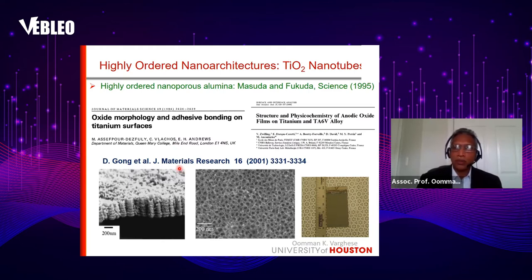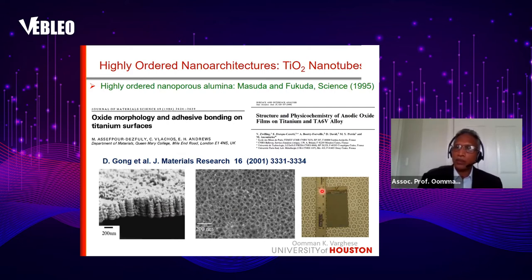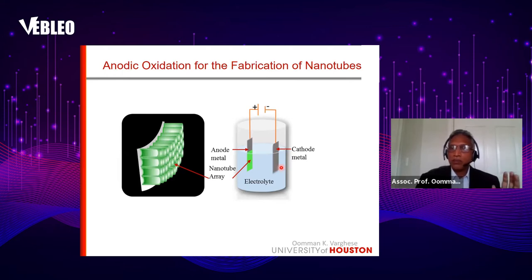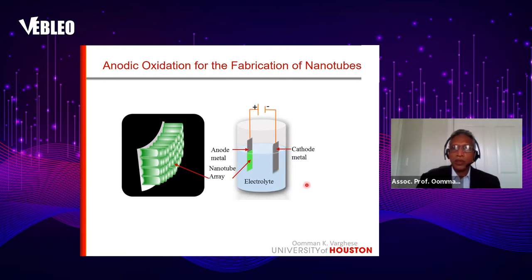In 2001, Gong and co-workers reported that pure hydrofluoric acid in water is enough to make the nanotube architecture. These are some images of the cross-section and top view of the titanium dioxide nanotube, and here you can see a digital image of a film of titanium dioxide formed on titanium metal. This grayish region is where the nanotubes are — it is an array of nanotubes that is highly ordered and vertically oriented. Anodic oxidation is a very simple, low-cost, and scalable process.